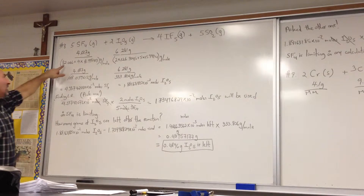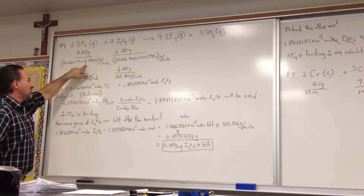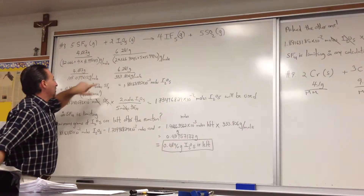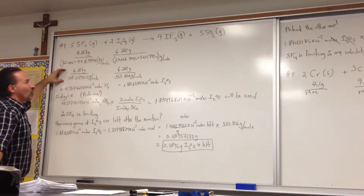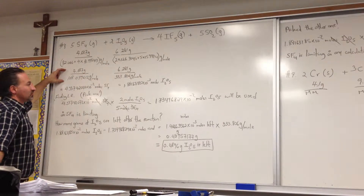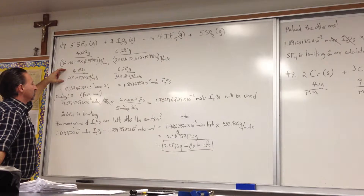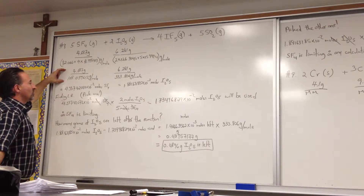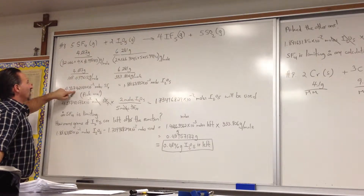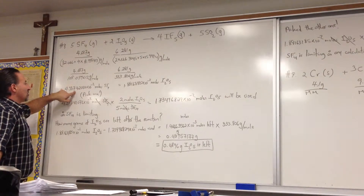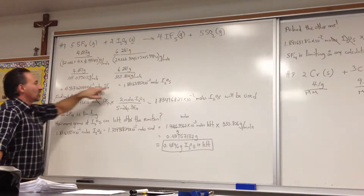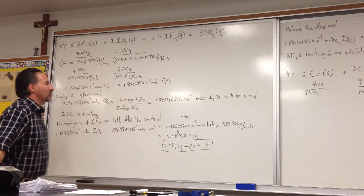I've divided by the molar mass of each one to find out how many moles — the moles of SF4 and the moles of I2O5.